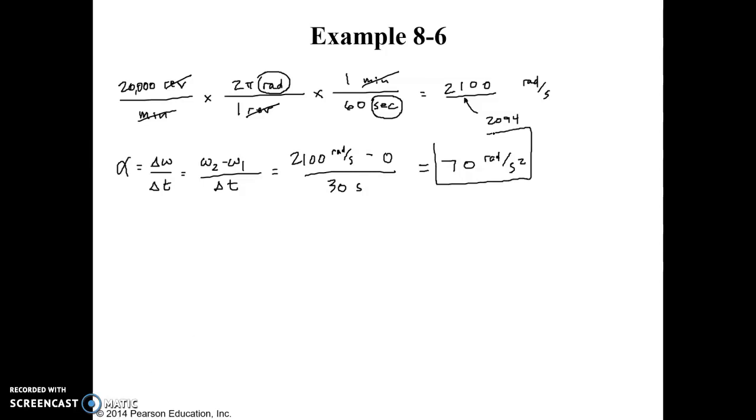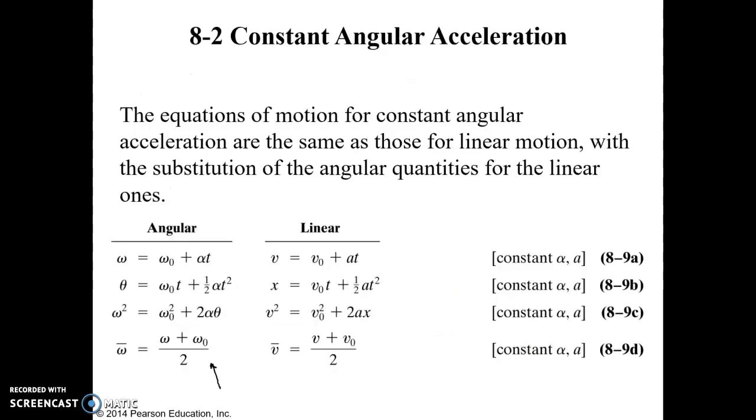So that answers part A of the problem, and part B wants to know how many revolutions did it go through. So we have constant acceleration. We're going to need to use one of our constant acceleration equations to figure this out. If I skip back here to this slide that has our constant acceleration equations, we know our final velocity, we know our initial velocity, we know acceleration and time, so we know everything in this equation, so that's not going to really help us out. And what we're looking for is how many rotations. So we want to know θ, so that equation has θ in it, that equation has θ, and that's it. So it's going to be one of these two.